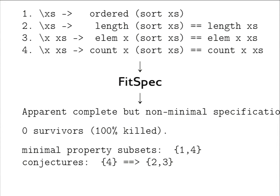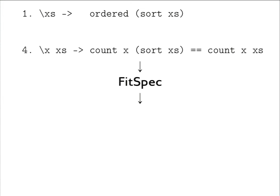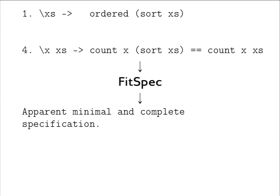This is a conjecture we should verify ourselves. If the counts do not change, then the elements will not change and the length will also not change. So we can remove properties 2 and 3, and we arrive at an apparently minimal and complete specification: a sorted list is simply an ordered permutation of the original list.